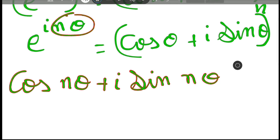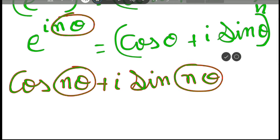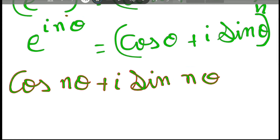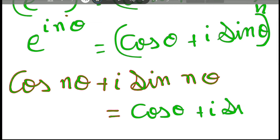We applied Euler's theorem, so this expression can be written as cos z plus i sine z. We get it from Euler's theorem — we have just substituted the angle. The left hand side gives cos n theta plus i sine n theta, and the right hand side is cos theta plus i sine theta, to the power n. We have thus proved De Moivre's theorem.